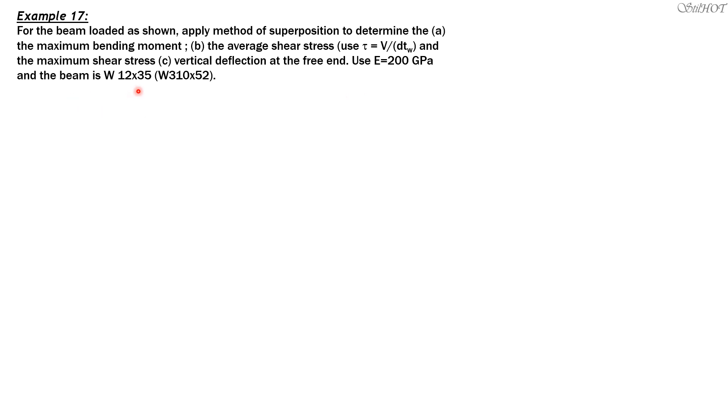The beam is W12 by 35. 12 is the nominal depth in inches, not exactly 12 inches but very close, and 35 is the uniform weight in pounds per foot. In SI that's W310 by 52, where 310 is the nominal depth in millimeters and 52 is the uniform weight in kilograms per meter.